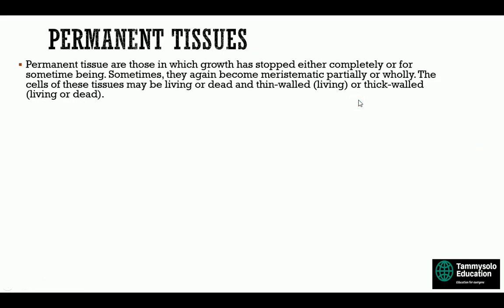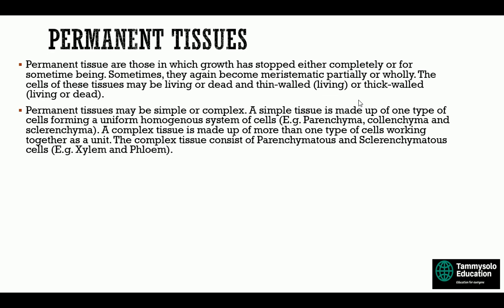Permanent tissues are tissues in which growth has stopped either completely or for some time. Sometimes they again become meristematic partially or wholly. The cells of these tissues may be living or dead — thin-walled when living and thick-walled when living or dead. Permanent tissues may be simple or complex. A simple tissue is made up of one type of cell forming a uniform, homogeneous system. A complex tissue is made up of more than one type of cell working together as a unit, such as xylem and phloem.